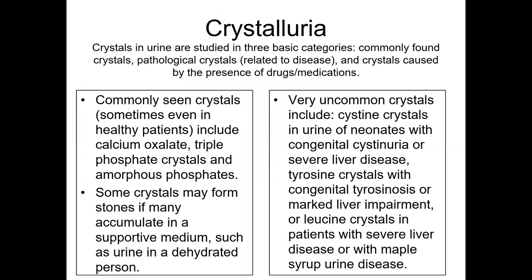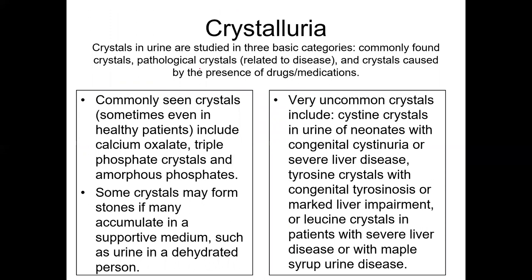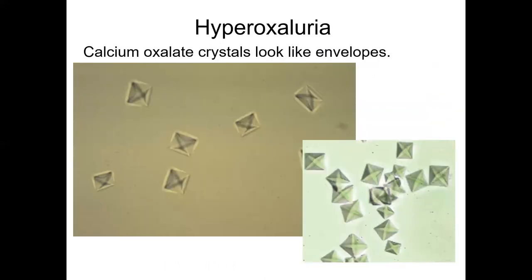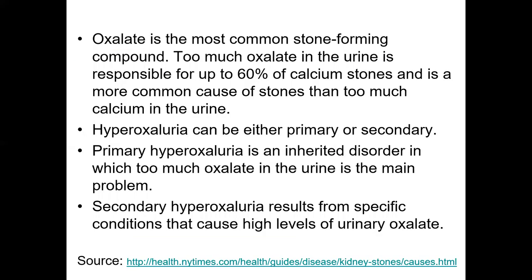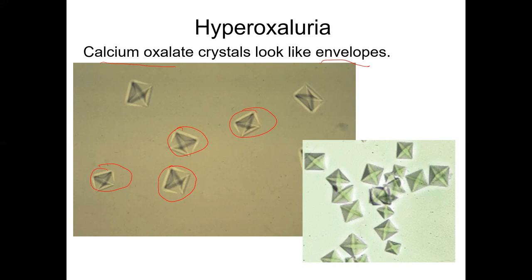Now, crystals — crystals form and can conjugate to form stones later. Stones are just large amounts of crystals packed together. The most common type are calcium oxalate crystals, which can form calcium oxalate stones seen in the urine. They kind of look like envelopes. Know what they look like — on the quiz you could see calcium oxalate crystals in the urine. About 60% of calcium stones are calcium oxalate, making it the most common kidney stone. But remember, these are crystals that will later form a stone — these are microscopic.